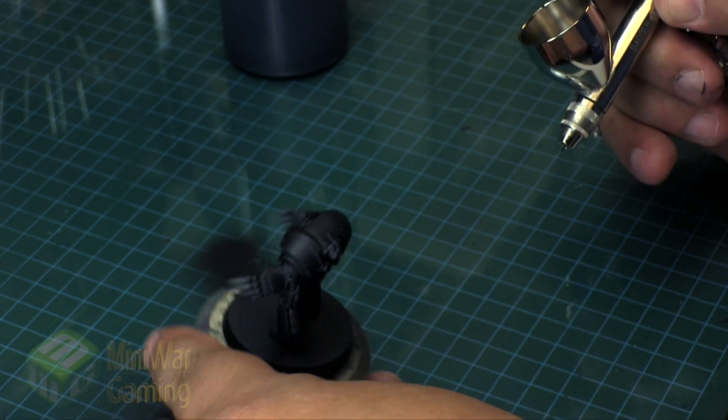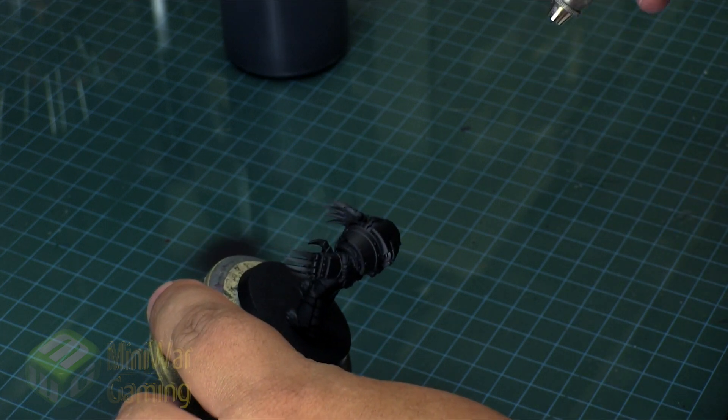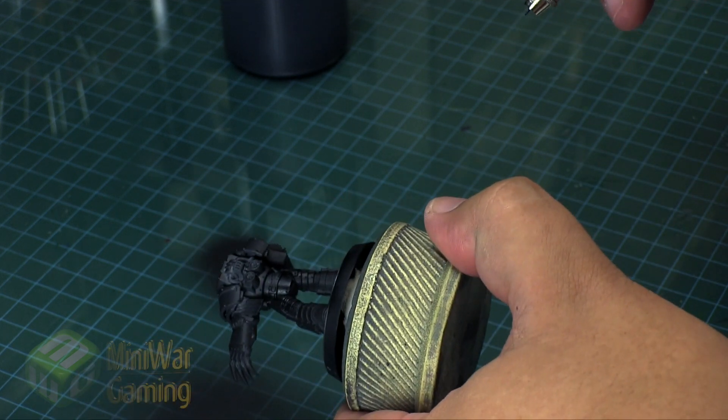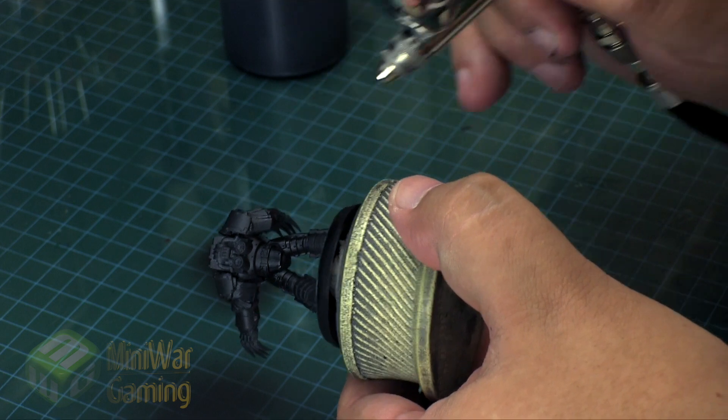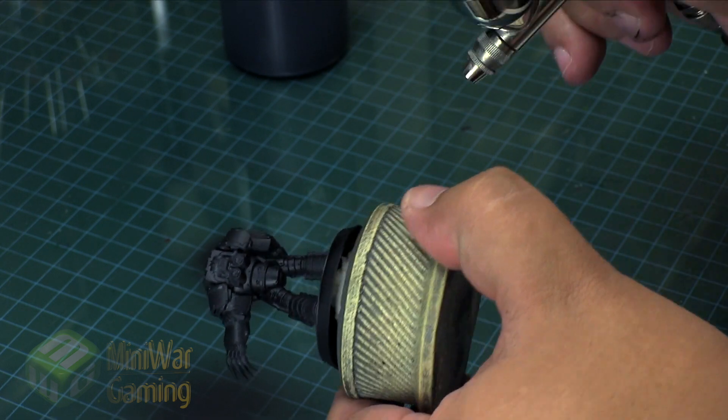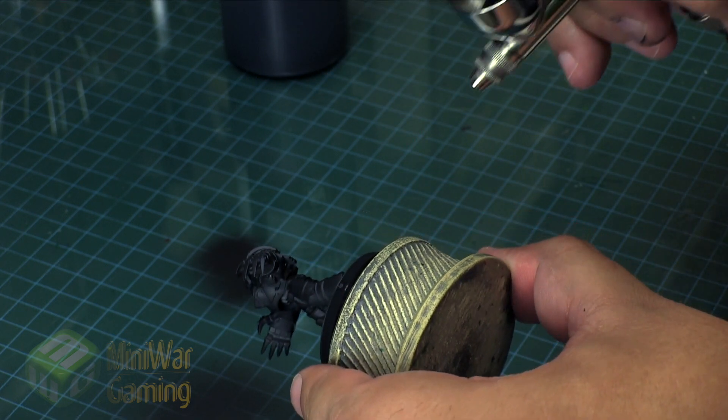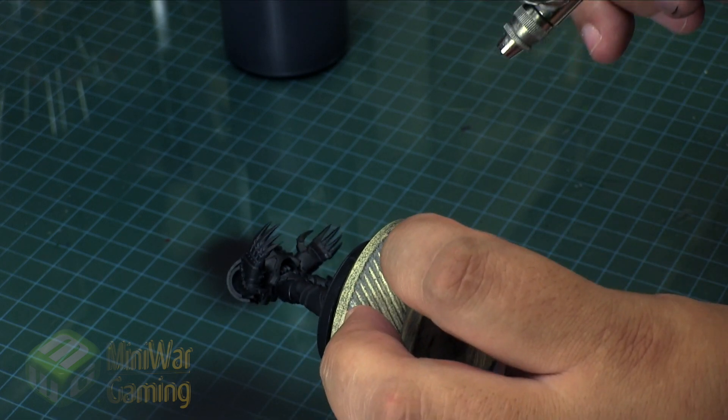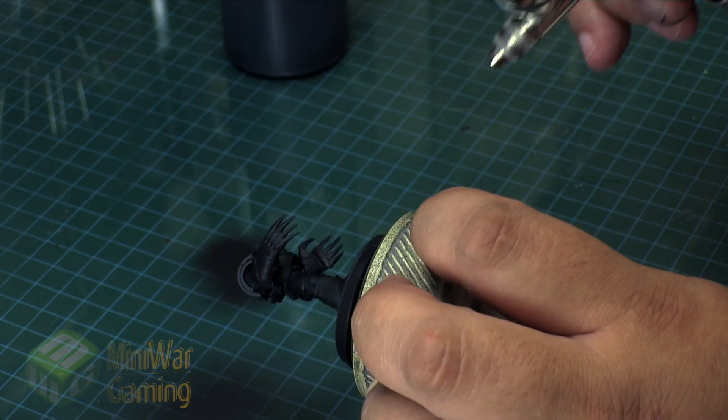Then basically I spray just once maybe from the top and then come in on the under angle and try and catch some of the underside, being mindful not to lay too much down.